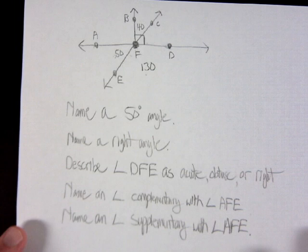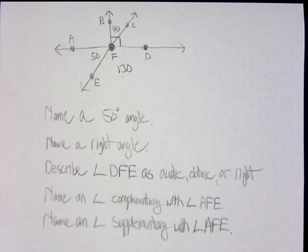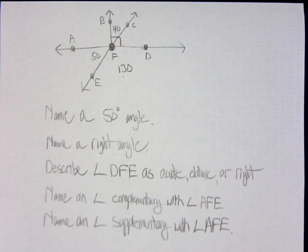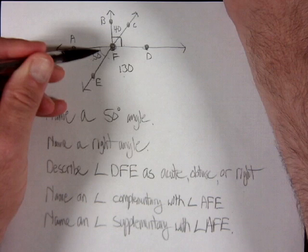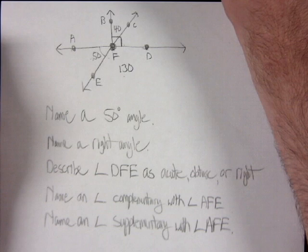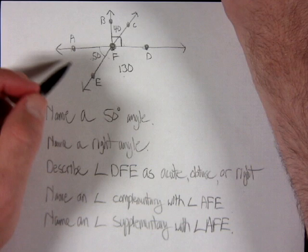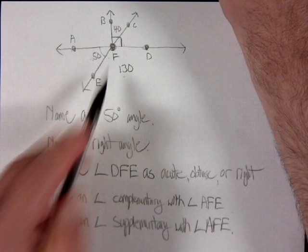Now let's look at some practice problems. We have a diagram with several angles drawn and measurements given for certain angles. The first question asks us to name a 50-degree angle. Looking at the diagram, I can see an angle labeled as 50 degrees.